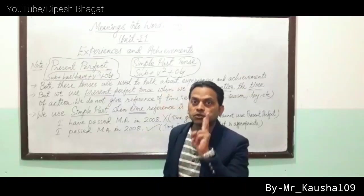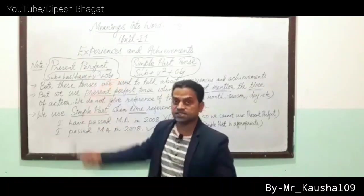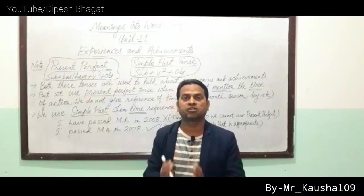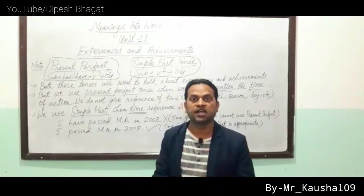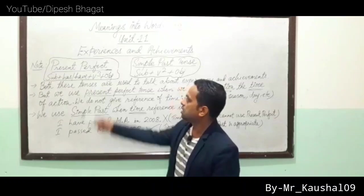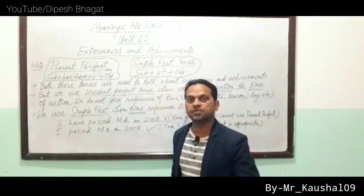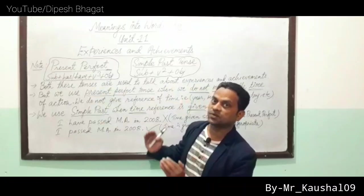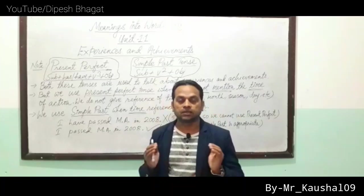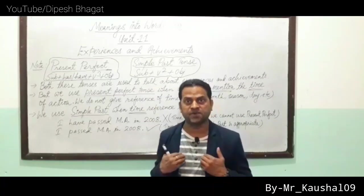When we talk about our experiences and achievements, we can use two tenses. Present Perfect: the structure is Subject + has/have + Verb 3 (past participle form). And Simple Past: Subject + Verb 2 (past form of the verb). These two tenses can be used to talk about our experiences and achievements.